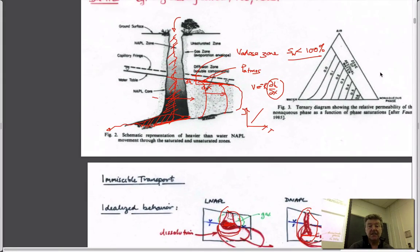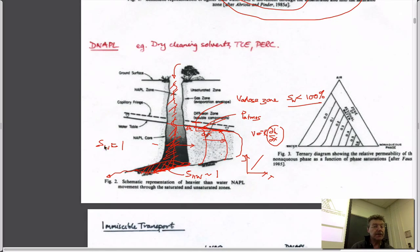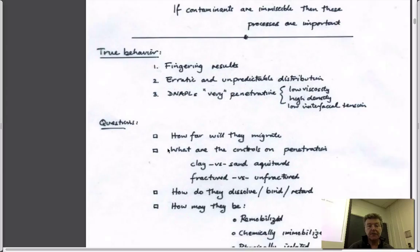Going back to our system: below the water table the saturation of water is 100%. The saturation of the non-wetting phase in the lens might also be about 100%. In the chimney where there's a smear, saturation of water might be around 70% and saturation of the non-wetting fluid around 30% — they must sum to 100%. That gives us a way to classify and describe these distributions.